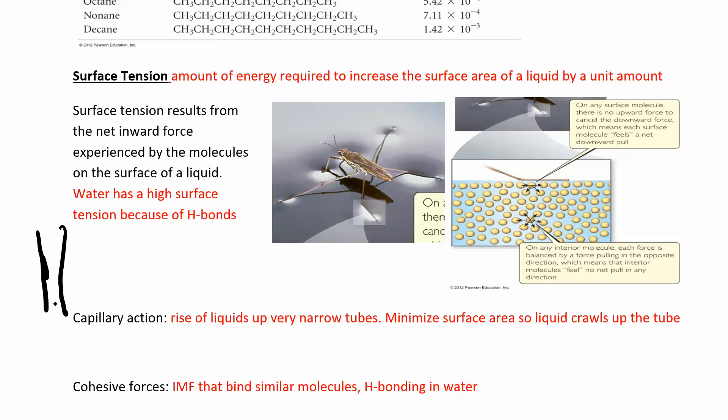What's happening there is the water wants to minimize the surface area. So it starts pulling up other water molecules to decrease the exposure of that surface of the liquid, and so it crawls up this tube pretty much by itself. It's kind of cool to watch - you can probably Google that one too.